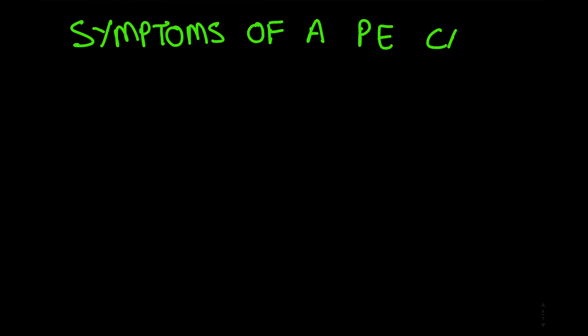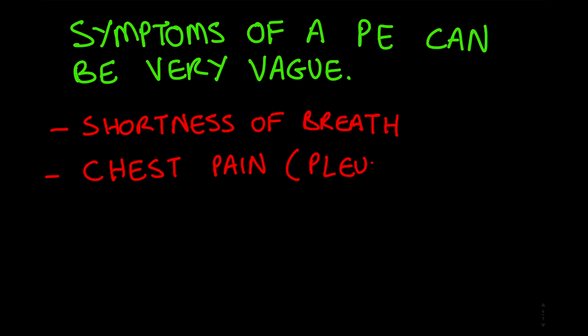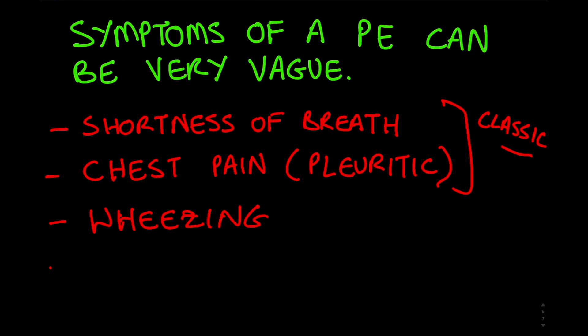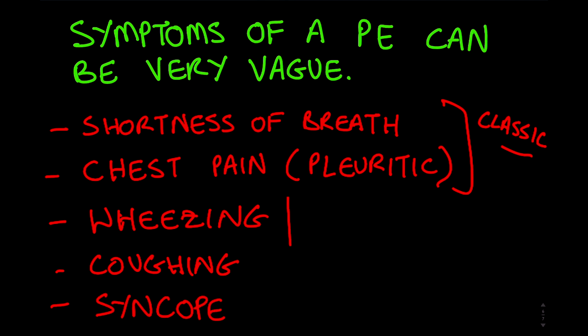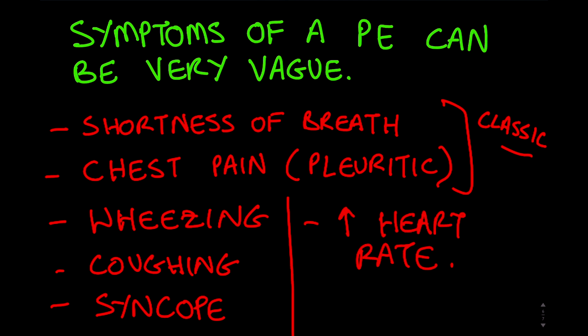A PE is a different issue altogether. There are two elements to why diagnosing a PE is a lot more complicated. The first issue is that symptoms of a PE can be very vague. Shortness of breath and pleuritic chest pain are two classic symptoms, but a lot of things can cause these. Furthermore, many patients don't even have these classic symptoms — they may present with something as vague as wheezing or coughing, or after having a syncope, which is just passing out. Other times it's something as subtle as an elevated heart rate.